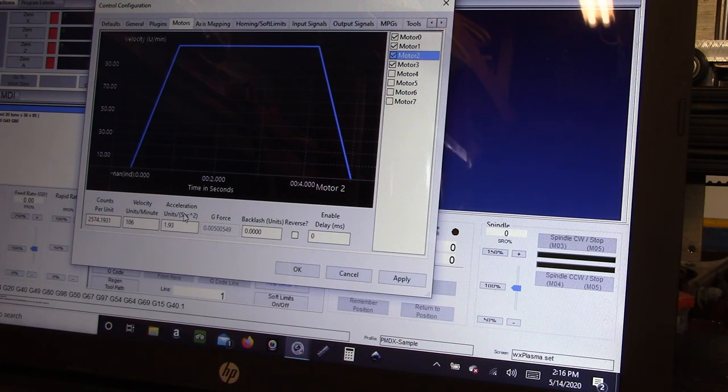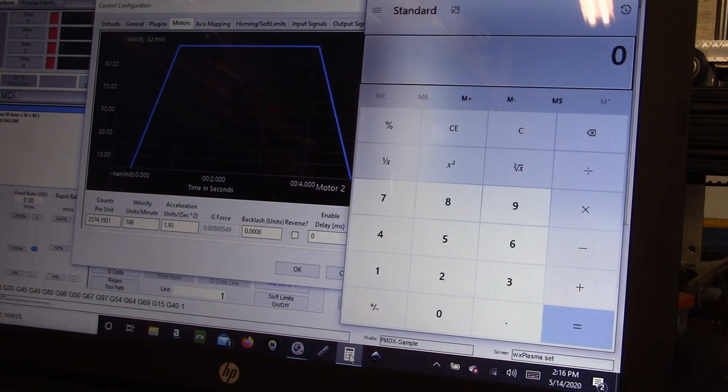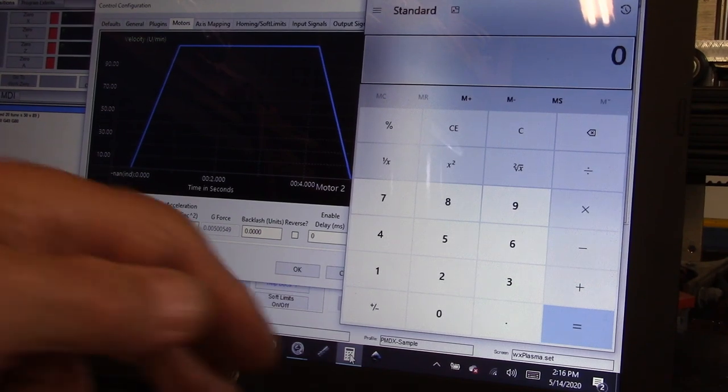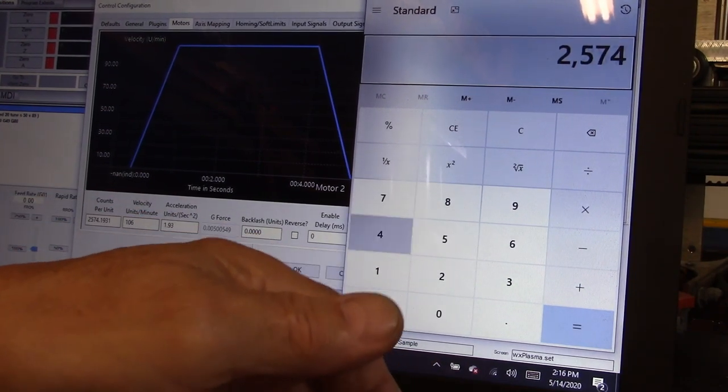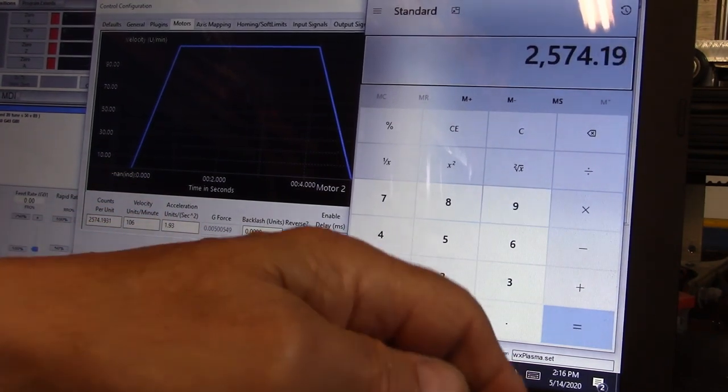So I will do math on that with a little calculator here. So we've got 2574.1931.